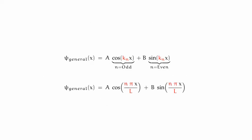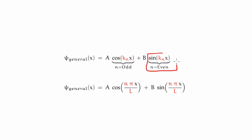So we have the general solution to the time independent Schrödinger equation for our particle in the infinite potential well extending from negative to positive L over 2. We have a linear combination of cosines and sines. We still haven't worked out the actual coefficients or constants. The cosine solutions are given when the principal quantum number is odd and the sine solutions are given when the principal quantum number is even.